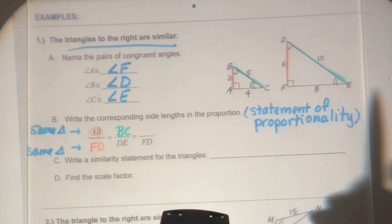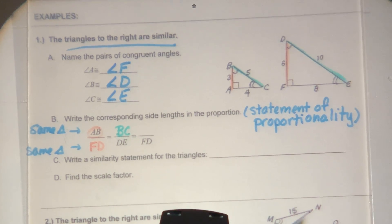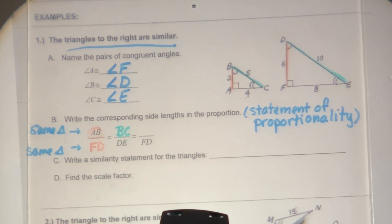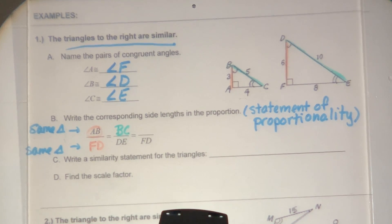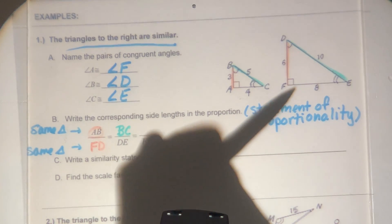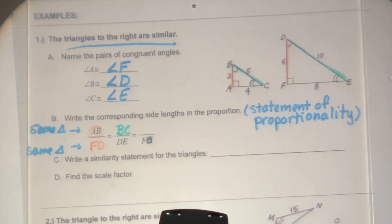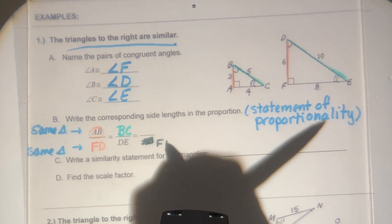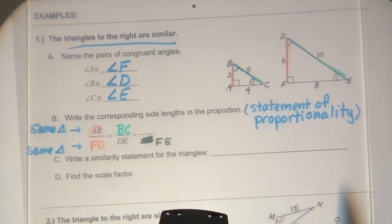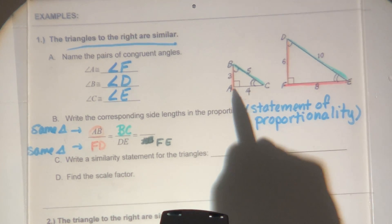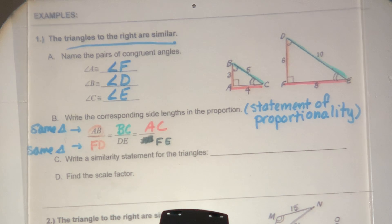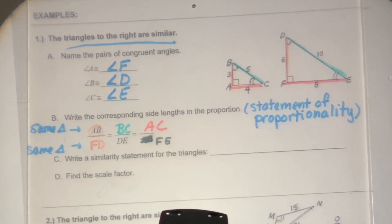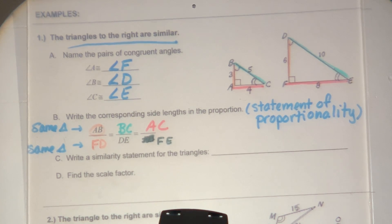The last pair of corresponding sides — this should say FE. FE is this side over here, and he's matching up with AC. So there's our statement of proportionality: AB over FD equals BC over DE equals AC over FE. It tells us who matches up with whom, and this will allow us to set up proportions to solve.